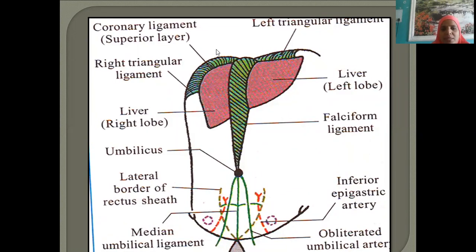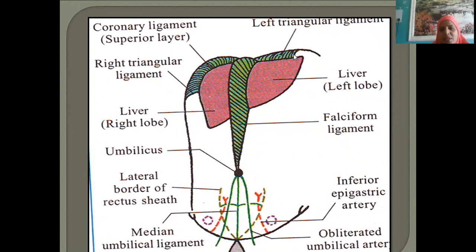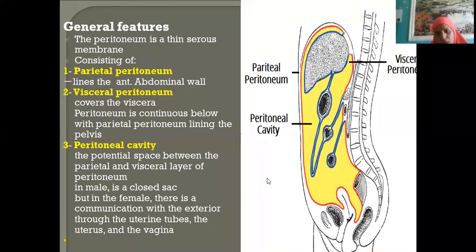The partition between thorax and abdomen is the diaphragm. The inferior surface of the diaphragm receives the continuation of the falciform ligament, which is the coronary ligament — this is the superior layer of the coronary ligament. The tapering edge is the right triangular ligament, and the other side is the left triangular ligament.